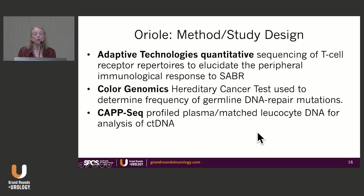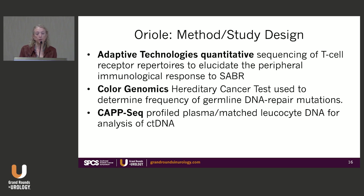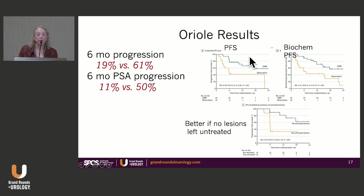An interesting aspect was quantitative sequencing of T-cell receptor repertoires to elucidate the peripheral immunological response to SABR, since single large doses of radiation to cancer can induce an immunologic response. Color Genomics hereditary cancer testing determined the frequency of germline DNA repair mutations, and plasma-matched leukocyte DNA was profiled for circulating tumor DNA analysis. Six-month PSA progression was 11% in those with treated metastases versus 50% on observation, with better outcomes when no lesions were left untreated.